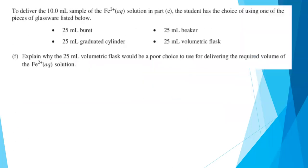Let's go look at what part F asked us to do. To deliver the 10.0 mil sample of the iron 2 solution that we just titrated, the student has the choice of using one of these pieces of glassware: a 25 mil buret, a 25 mil graduated cylinder, a 25 mil beaker, a 25 mil volumetric flask. And the question is, why would the 25 mil volumetric flask be a really poor choice to deliver the required volume of the iron 2 solution? They want us to have 10 mils. So the beaker is not a good choice because they're not very precise. The buret or the graduated cylinder could be fine. So what's wrong with the volumetric flask? Aren't they used for measurements? Well, that's true. They are.